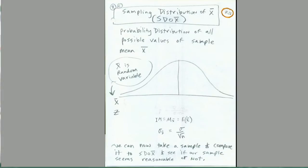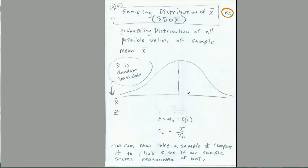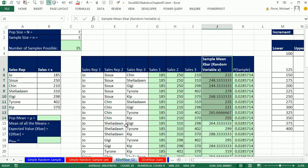We're going to discover something surprising: when we actually take the mean of all the means, it'll be called the expected value of x̄, and it's actually going to be exactly equal to the population mean. Then we'll also discover, when we plot the sampling distribution of x̄, that the variation is less. So the standard deviation sub x̄, or the standard deviation of the sampling distribution of x̄, will be adjusted by dividing by the square root of n. Once we establish that we can use the normal curve, we can take a sample and compare it directly to the sampling distribution of x̄ to see if our sample is reasonable.